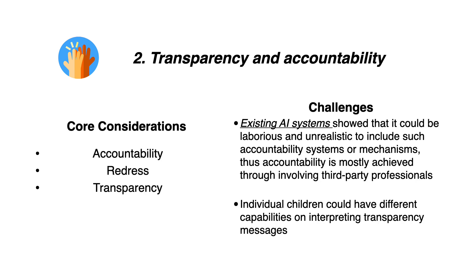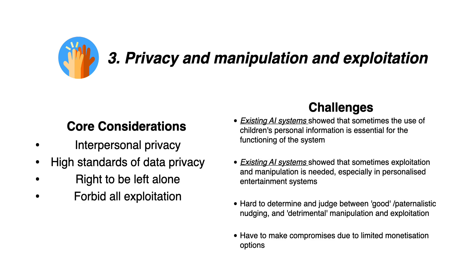The second principle is transparency and accountability, which refers to identifying a chain of accountability for system misbehaviour and making systems easy to understand and predict. In terms of gaps and challenges, we encourage future designers to think of new ways for establishing accountability mechanisms, and to take into consideration the different capabilities of individual children in interpreting transparency messages.